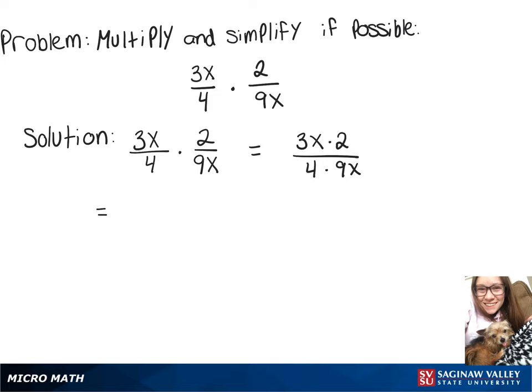3x times 2 is 6x, and 4 times 9x is 36x.